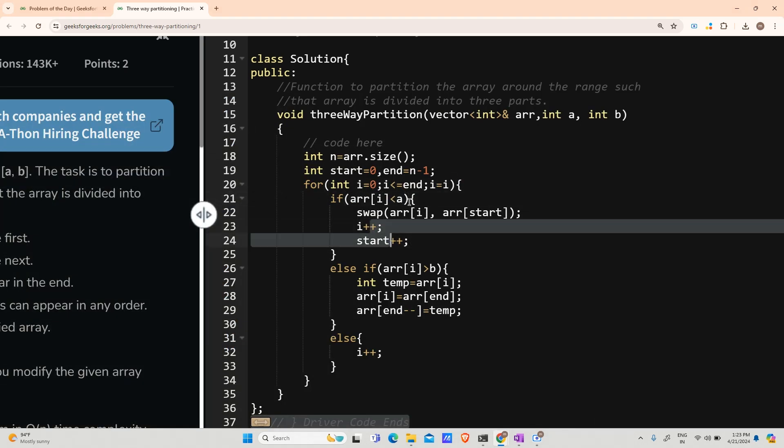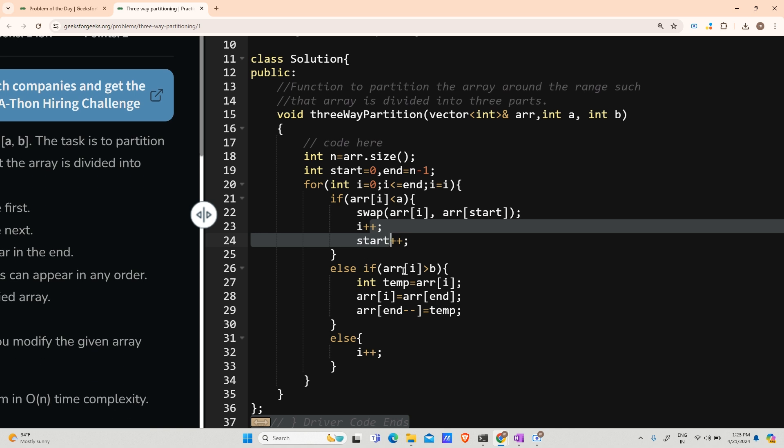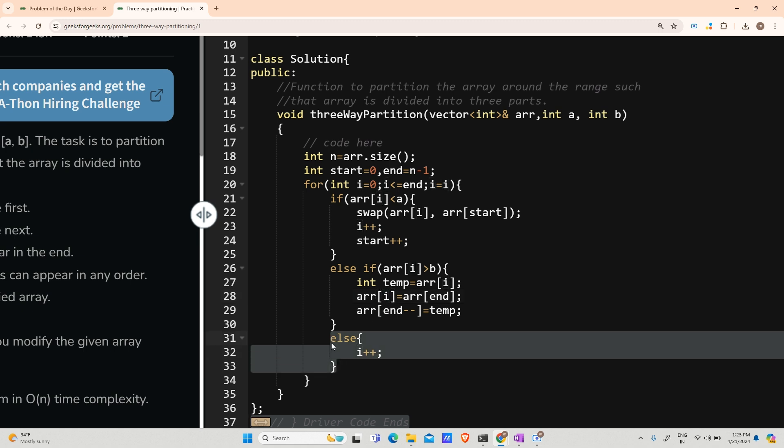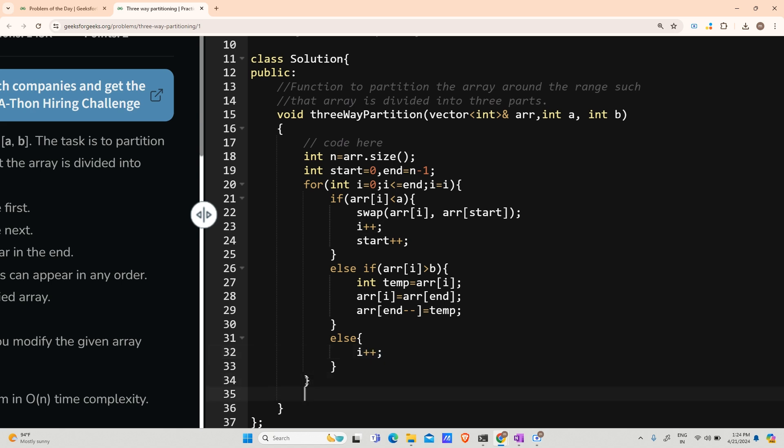If arr[i] is greater than a, I will say i++, start++ after swapping them. Similarly, if arr[i] is greater than b, I will swap and end--. Here I will not move the i pointer forward because I have to reiterate on the same position. If both of them are not true, I will move to i++.